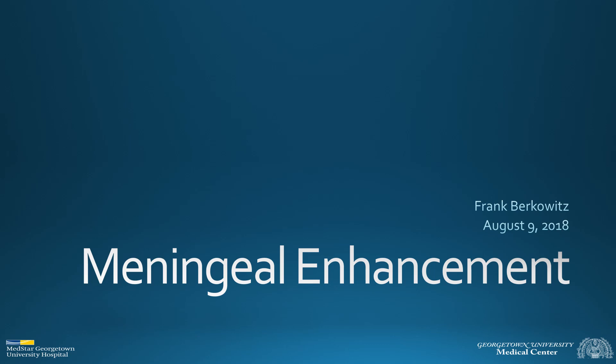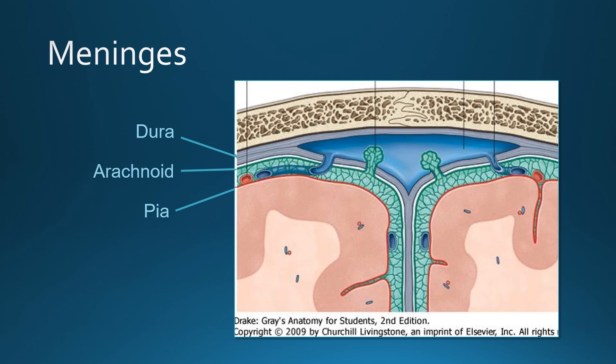I'm going to talk about meningeal enhancement. First, just to review the anatomy. The meninges are composed of three layers. The dura, also known as the pachymeninges, is a double layer that splits to form the dural sinuses. Otherwise, the two layers are firmly attached to each other and function as one layer.